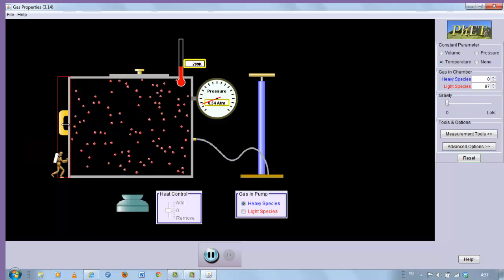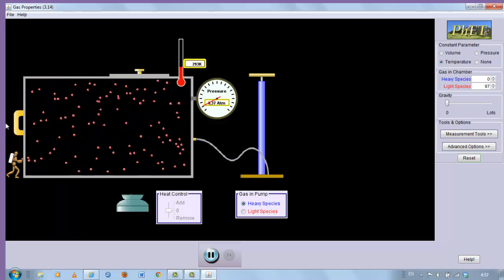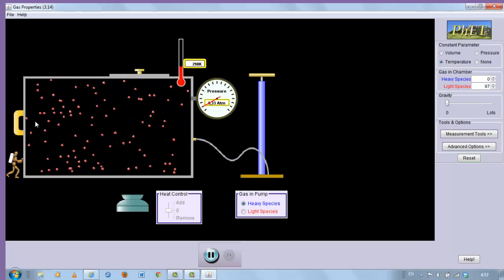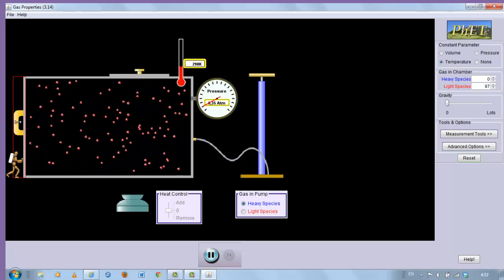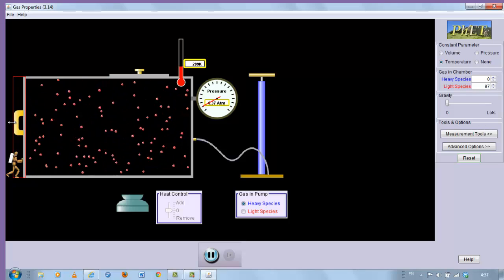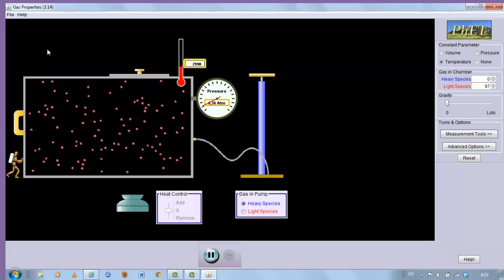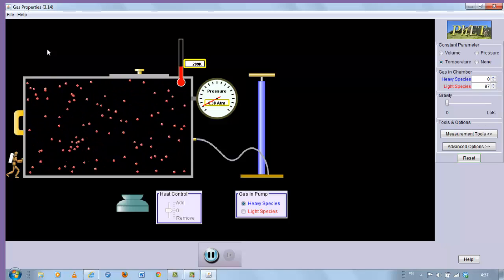We have selected constant parameter to be temperature. The next thing you need to do is make the container as big as you can by dragging. As I put my cursor over this handle, I can drag it all the way to the left. Now the container is as big as possible.